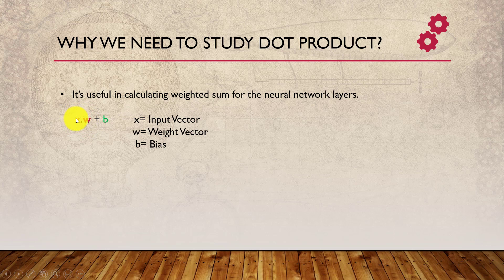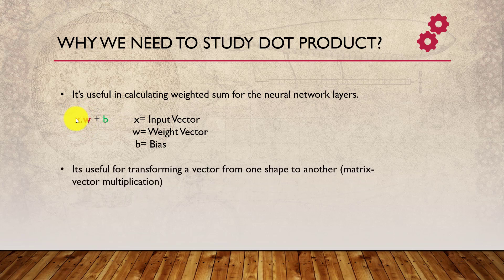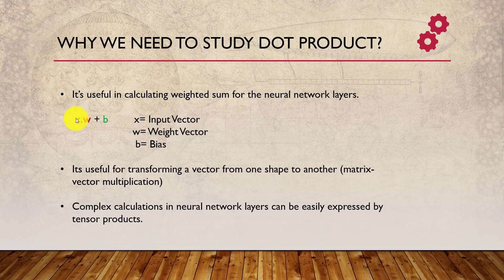Even when we want to transform a vector from one shape to another — say I have a vector with three elements and I want to make it four elements — we can multiply a vector with a particular matrix of a particular size. Tensor dot product makes it easier to calculate the complex calculations that happen at the neural network layer level.